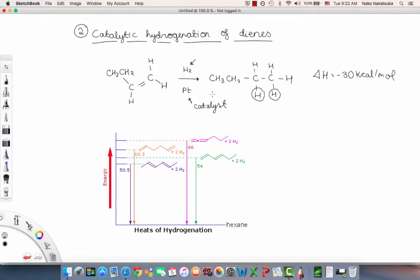So when this conversion of dienes to alkanes occurs, the heats of reaction, or heats of hydrogenation, reflect the characteristic differences in their thermodynamic stability. In this case, the delta H of the reaction is negative 30 kilocalories per mole. So now let's look at this diagram to see how thermodynamic stability is affected. The heat of hydrogenation of just 1-hexene was approximately 30 kilocalories per mole, and we use this as a reference to find the different heats of reaction for these four molecules.